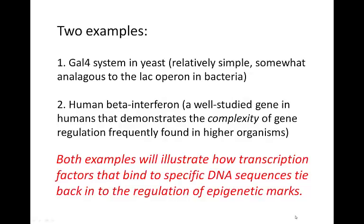We'll talk about two specific examples of how individual genes are regulated in eukaryotes. The first is the GAL4 system in yeast — a relatively simple example analogous to the lac operon in bacteria. The second is the more complex human beta interferon gene, covered in class. Both examples illustrate how transcription factors tie back into regulation of epigenetic marks on histones and methylation of DNA.